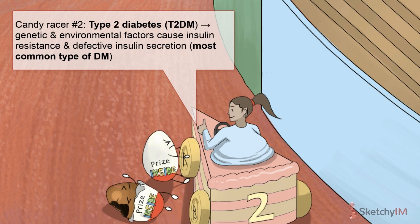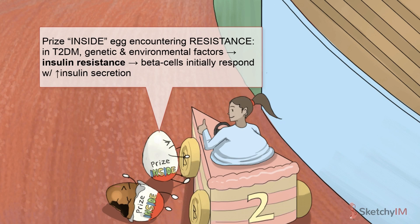Think of type 2 diabetes as a condition of relative insulin deficiency. An interplay of genetic and environmental factors leads to a combination of insulin resistance and defective insulin secretion. Insulin resistance, represented by this egg dude facing some resistance as he tries to adjust that tire, forces the pancreatic beta cells to secrete more and more insulin in order to have the same effect. It's thought, however, that these beta cells have underlying defects in their ability to produce insulin, and now that all this insulin is needed, these defects really begin to become a problem.